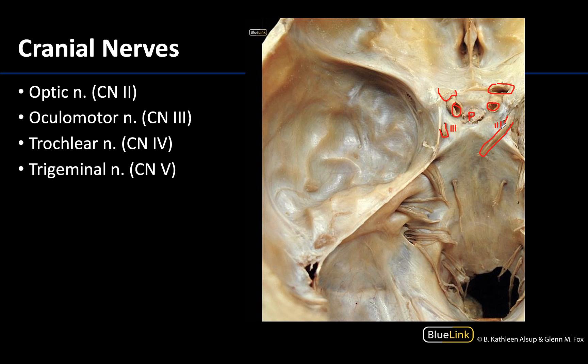Both the root of the trigeminal nerve and the trochlear nerve or cranial nerve 4 can be found in association with the dura on the petrous part of the temporal bone. The trochlear nerve is considerably more difficult to locate on a dissection, which makes sense because it is the smallest cranial nerve. But you can clearly see the trigeminal nerve right there.